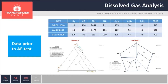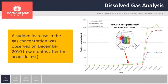We did an acoustic emission test on this unit, and we found acoustic activity detected on the upper part of the phase U coil. The test was done in June. At that point, the gases were relatively low. Based on that condition, the utility decided to keep the transformer in service. A few months later, the gases spiked and increased significantly, and at that point the utility decided to take an outage and do an internal inspection.